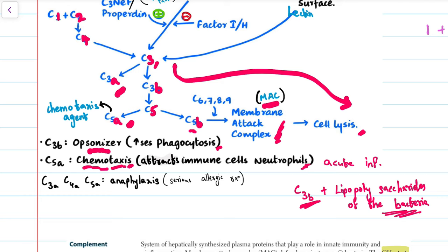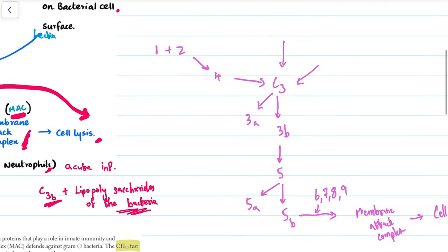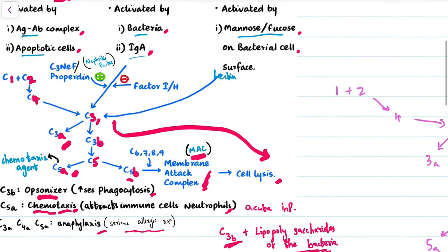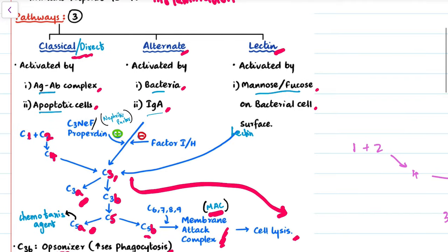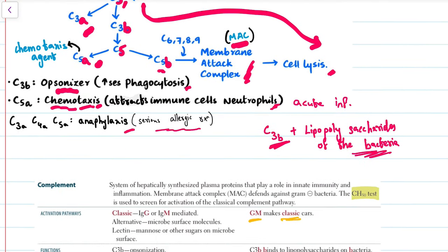C3a, C4a, and C5a complements cause anaphylaxis. Anaphylaxis is actually a serious allergic reaction which can be deadly. For checking whether the classical pathway is occurring, there is a test known as the CH50 test, which is used to screen for activation of the classical complement pathway.